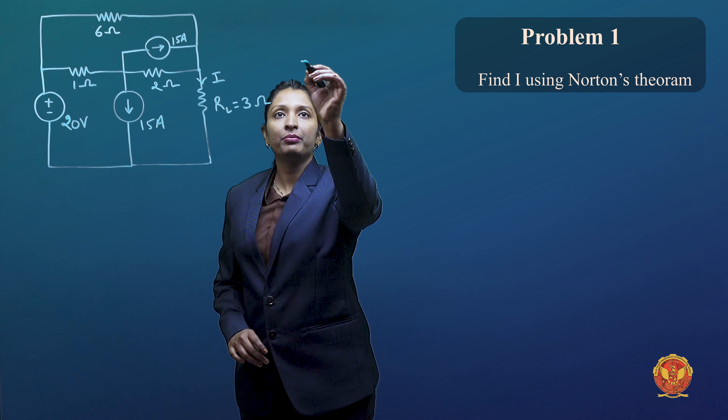We will solve this: (V minus 20) plus 30 plus (V divided by 2) equals 0. So the value of V is minus 20 by 3 volts.